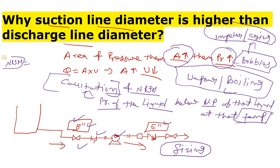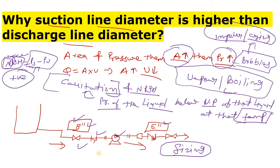If we know about NPSH - Net Positive Suction Head - it means the net suction head should always be positive. Your suction side pressure minus vapor pressure gives you the NPSH value. This difference should always be positive. If it is positive, your fluid is okay and your pump will run smoothly. But if it is negative, cavitation could occur.